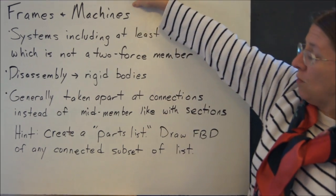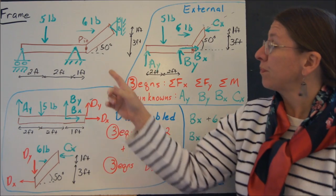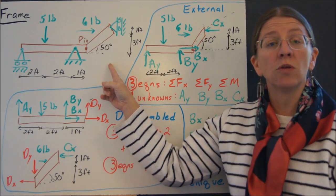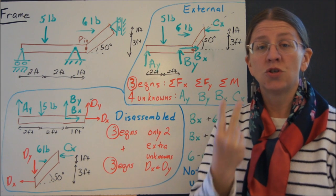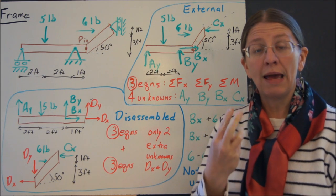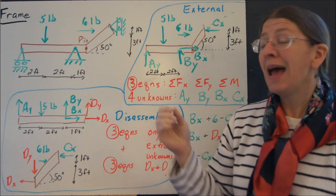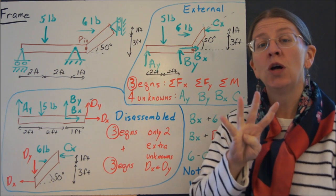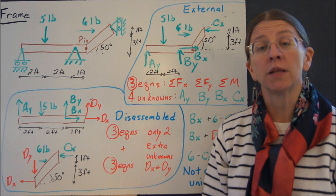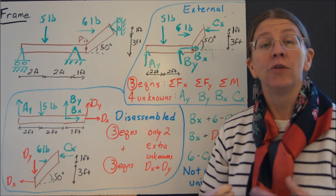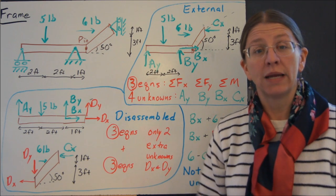So let's look at one example of how this all works together. This is a very simple frame with only two parts. But when you look at it, it has two rollers and one pin, so it's going to have four external reaction forces. Now that's the other clue that you're dealing with something that you're going to have to disassemble if you can't solve it without taking it apart.